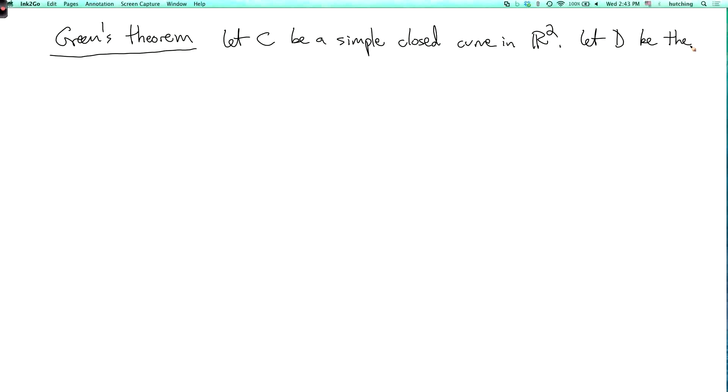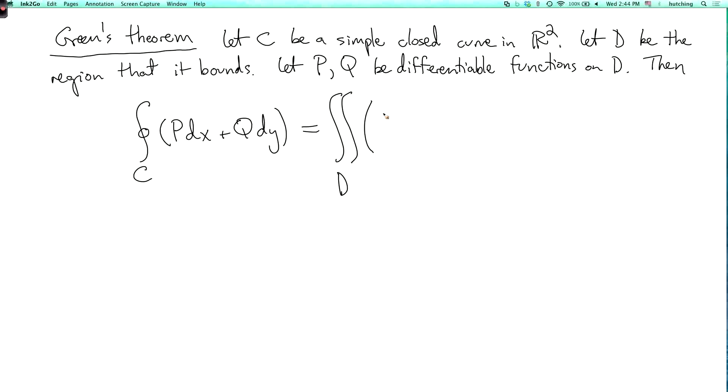Green's Theorem says: let C be a simple closed curve in R². Let D be the region that it bounds. Let P and Q be differentiable functions that are defined on the whole domain, or possibly in a larger domain. Then if you look at the line integral over C with the positive orientation of P dx plus Q dy, this is the double integral over the whole domain of ∂Q/∂x minus ∂P/∂y with respect to area.